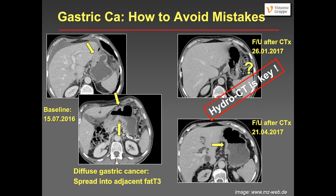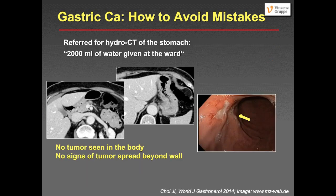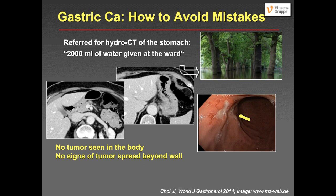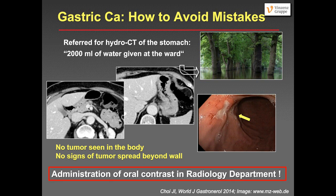HydroCT is key. In another example, we asked the ward to give the water before bringing down the patient because we were in a hurry. They said they had given two liters of water. When the CT was done, there was absolutely no water on board in the patient and you really cannot tell where the tumor is. The endoscopic images showed this was actually not a very small cancer, yet we could not see it. The important point is that we don't know what the patient did with the water. Oral contrast must be administered in the radiology department and under our control. Otherwise, it doesn't work.